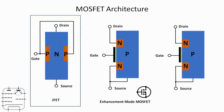For reference, a depletion mode MOSFET is almost the same, but with one addition: between the two N-channels there is a thin N-channel that actually connects them together. That gives the depletion mode MOSFET its distinctively different symbol. The other thing to notice is that a depletion mode MOSFET, a little like a JFET, is a normally-on device, whereas the enhancement mode MOSFET is a normally-off device.